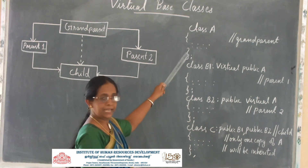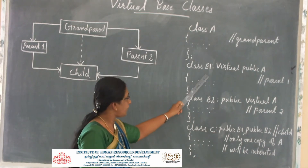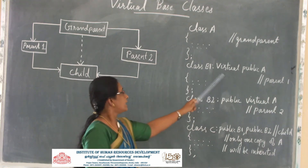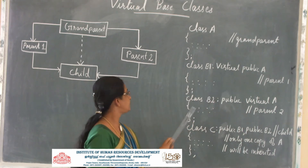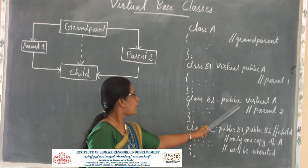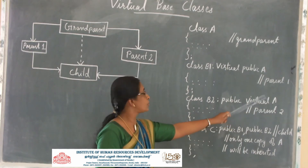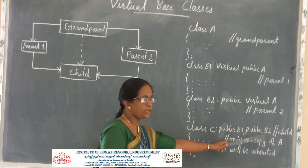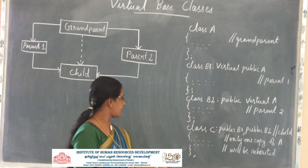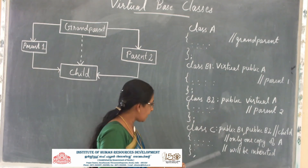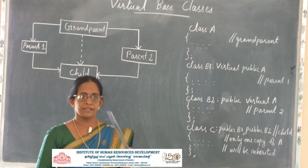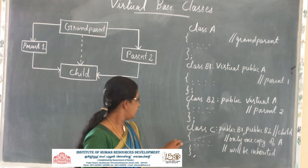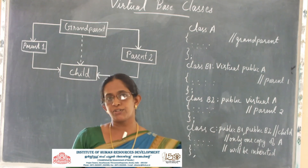Class A is the grandparent base class. Class B1 is declared as: class B1 colon virtual public A. The virtual keyword is used to declare a virtual base class, meaning A is a virtual base class. Then class B2 colon public A, and B1 and B2 are the base classes of class C. The compiler now knows only one copy of the grandparent can be stored, so ambiguity is avoided.